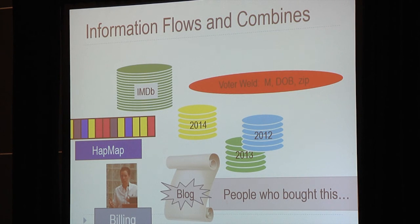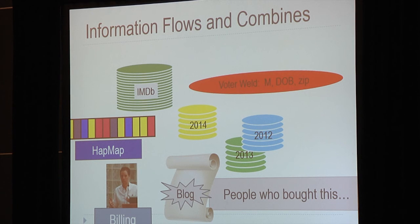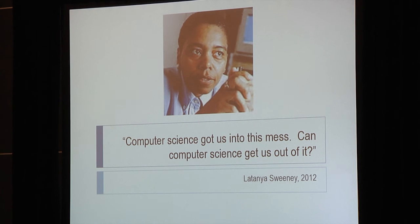It's getting worse because in modern times the confidential database is no longer in vitro — it's in vivo. It's being used to generate publicly observable actions. It can be cross-linked with other data sets available on the web, so information flows and combines in many different ways, making privacy protection much, much harder. As Latanya Sweeney said, computer science got us into this mess — can computer science get us out of it? And that's what we're going to do.